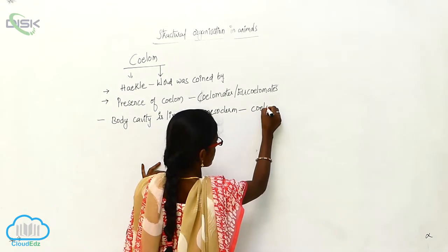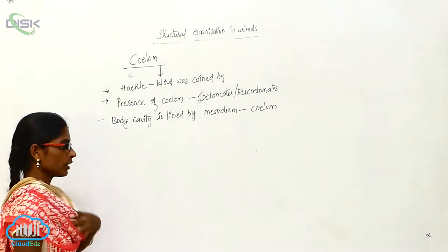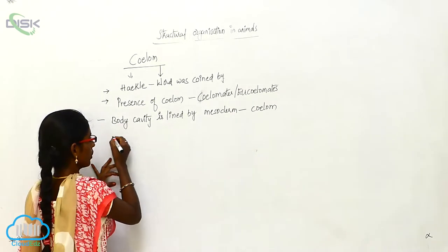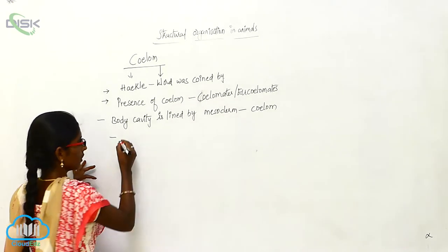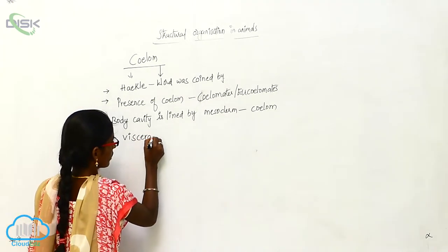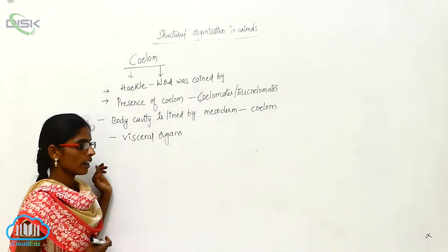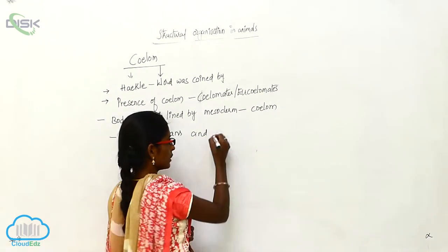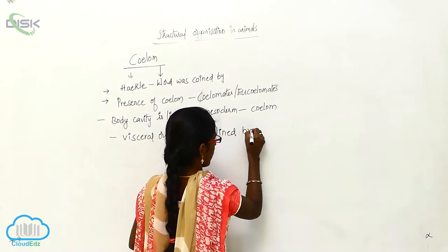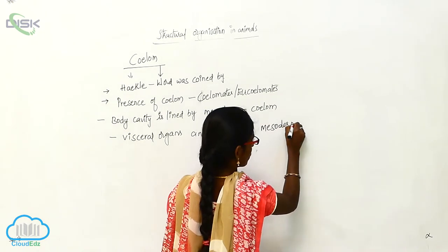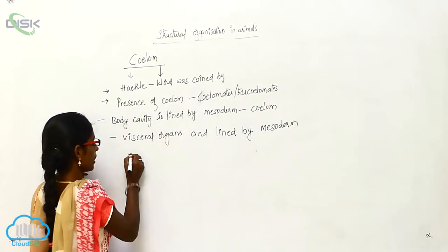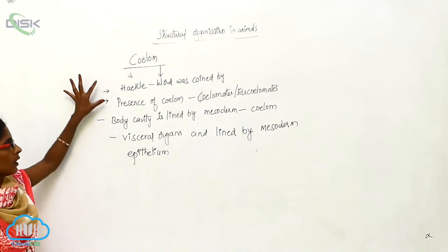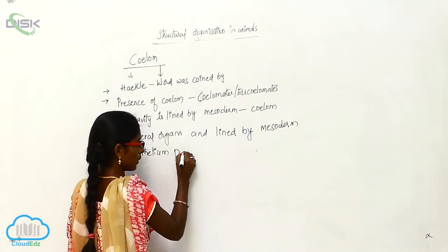The mesoderm lining is called the coelom. In this body cavity, the visceral organs are lined by mesodermal epithelium, called the coelomic epithelium or peritoneum.